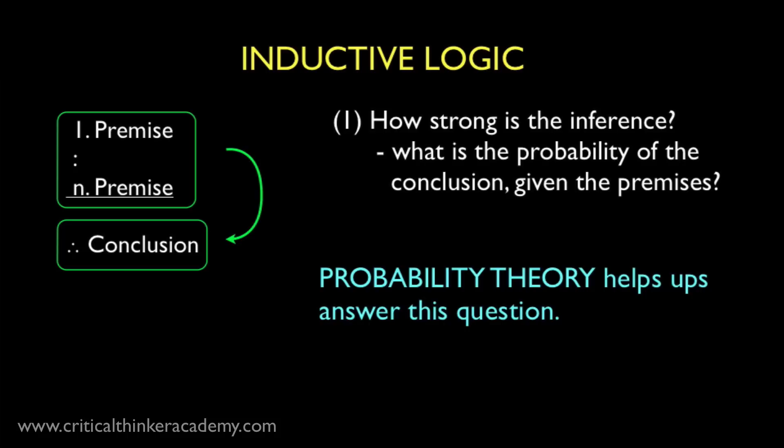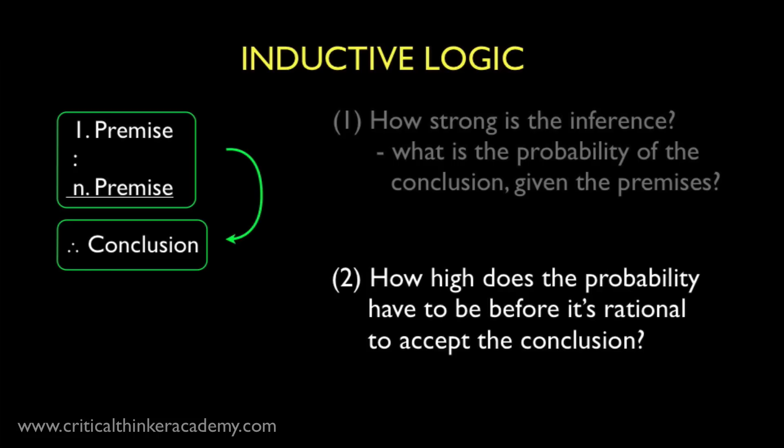Now the other question we need to ask about inductive arguments isn't so easy to answer. The question is, how high does the probability have to be before it's rational to accept the conclusion? This is a very different question. This is a question about thresholds for rational acceptance. How high the probability should be before we can say, okay, it's reasonable for me to accept this conclusion, even though I know there's still a chance it's wrong. In inductive logic, this is the threshold between strong and weak arguments. Strong arguments are those where the probability is high enough to warrant accepting the conclusion. Weak arguments are those where the probability isn't high enough.